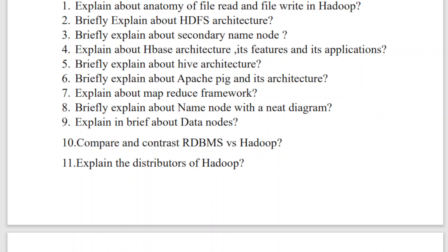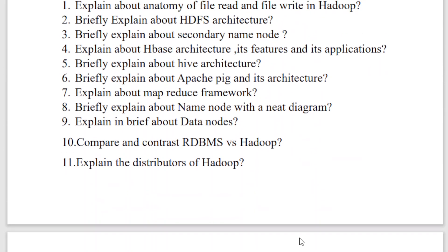Read about HBase, Hive, and Apache Pig. Cover MapReduce in full — the mapping and reduce framework, architecture, features, limitations, everything from top to bottom. Briefly explain the name node with a neat diagram: how nodes are assigned, how files are divided, and how data is stored in HDFS. Explain data nodes, compare and contrast RDBMS versus Hadoop, and cover the distributors of Hadoop. These are enough for Unit Four from an external exam perspective.